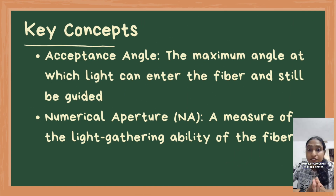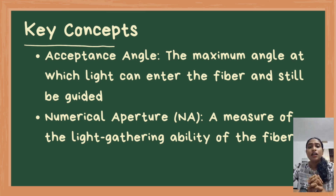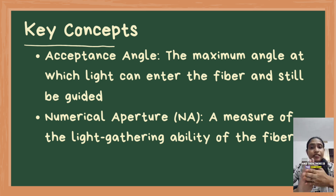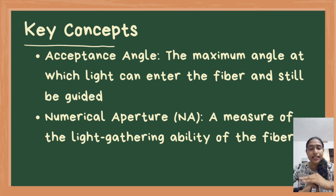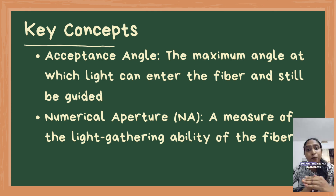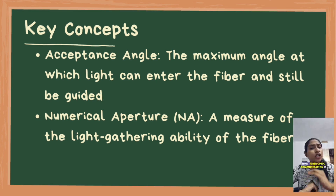Key concepts in fiber optics include the acceptance angle, which is the maximum angle at which light can enter the fiber and still be guided. There is also numerical aperture (NA), which measures the fiber's light-gathering ability, crucial for capturing more light and supporting higher data range.